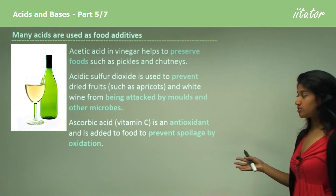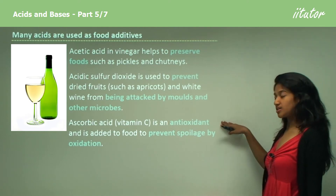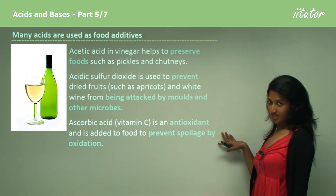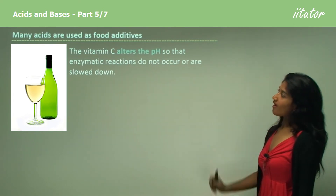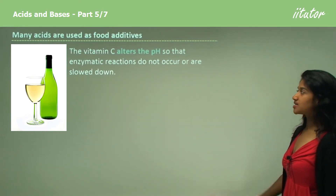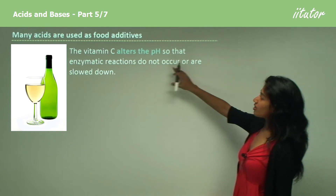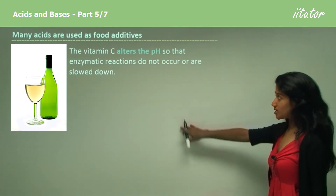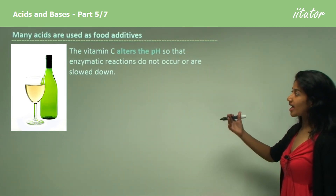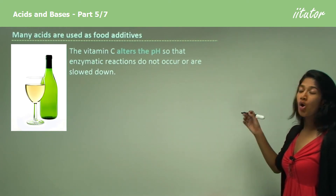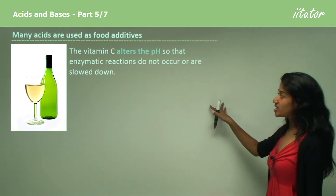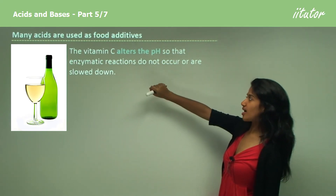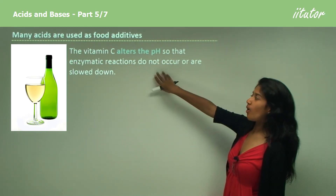Ascorbic acid, which is vitamin C, is an antioxidant, which means it prevents spoilage by oxidisation. Vitamin C alters the pH — since vitamin C is acidic it lowers the pH so that enzymic reactions do not occur or slow down. In effect, it denatures the enzymes by altering the pH.